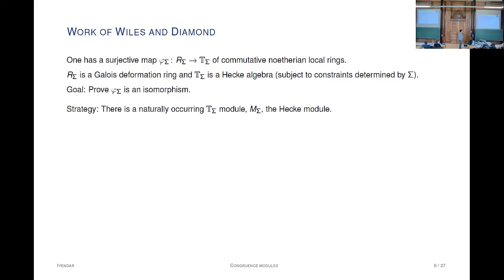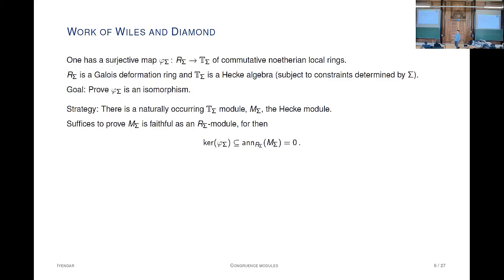The strategy, building off the paper of Diamond, is that there is a module over the Hecke algebra, which I'm going to call M_sigma, the Hecke module. The goal is to prove that this is faithful as a module over the deformation ring R_sigma. If it's faithful, the kernel of the map of rings is in the annihilator of the module, so the kernel is zero, and it's an isomorphism.